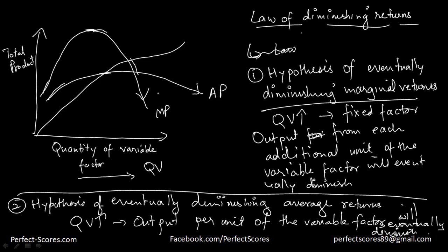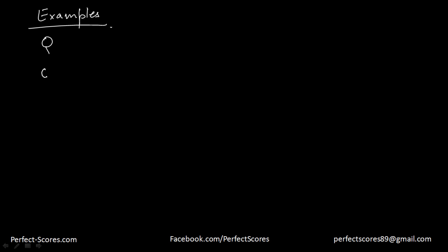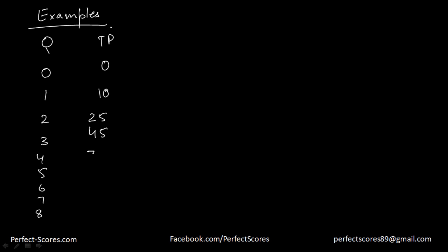So we're going to take an example. You can actually use the table from the previous video as well. Let's suppose I have labor — I have no people hired right now, so total product is zero. As soon as I have one person, my output becomes, let's say, 10. I hire two people, it becomes 25. I have three, four, five, six, seven, eight people, and my total output just keeps on increasing.